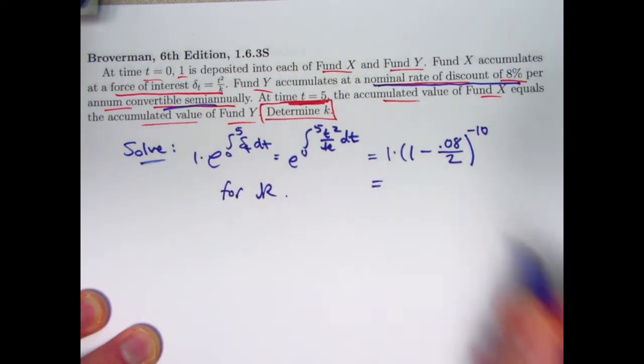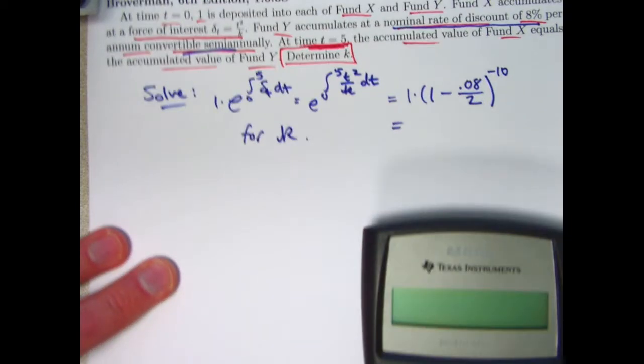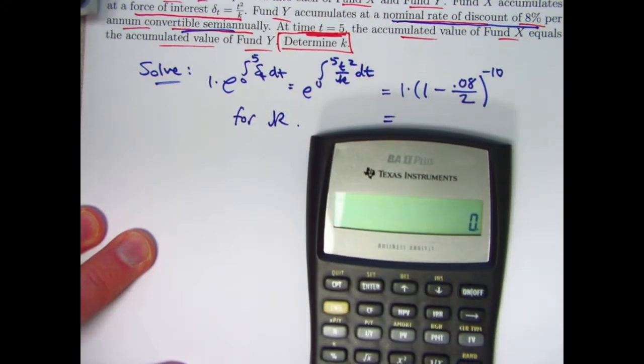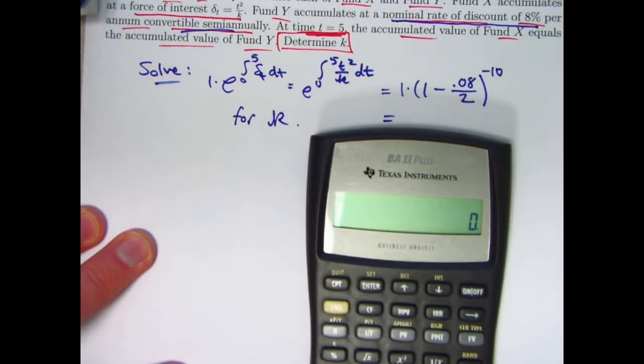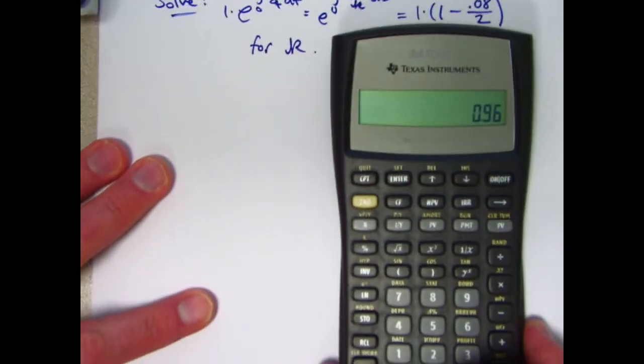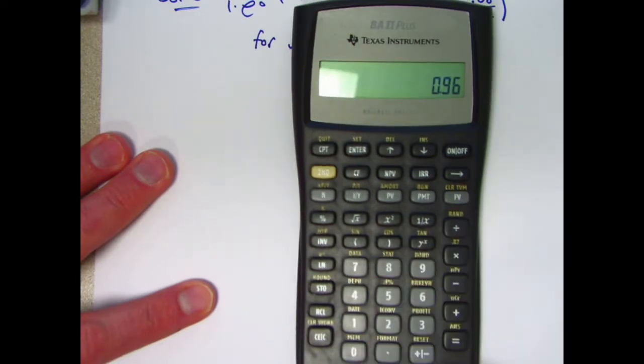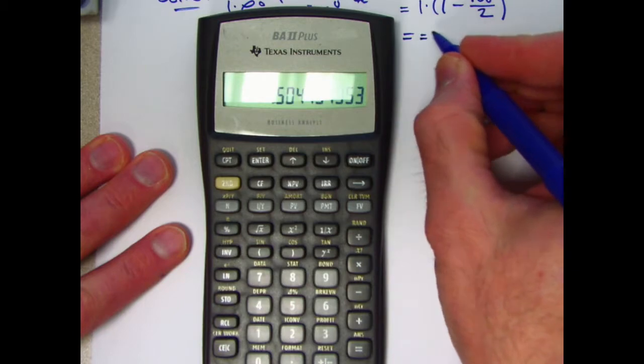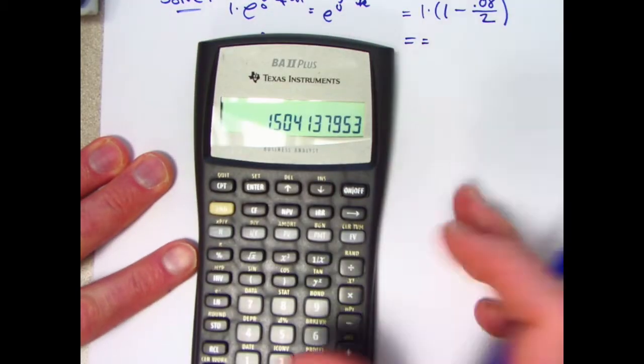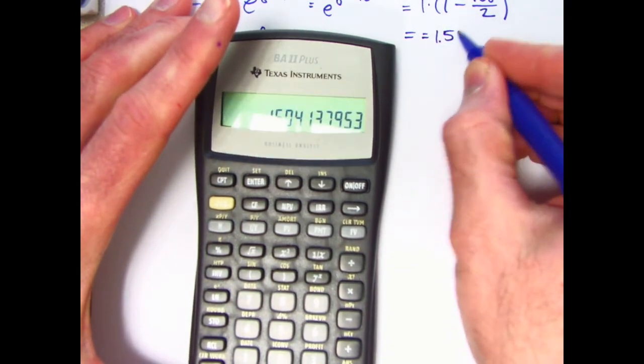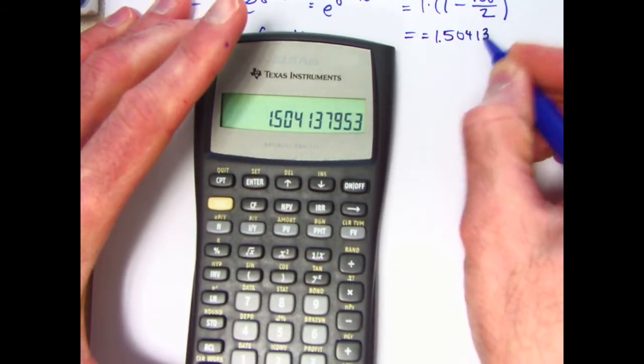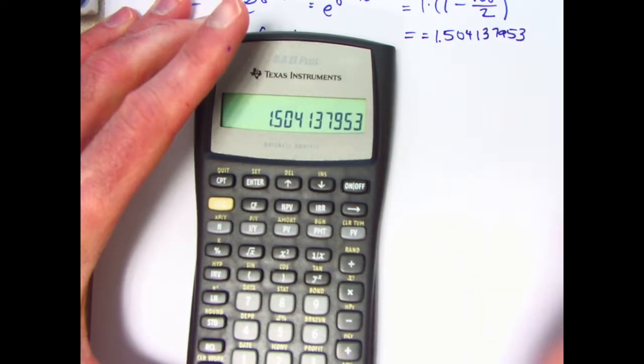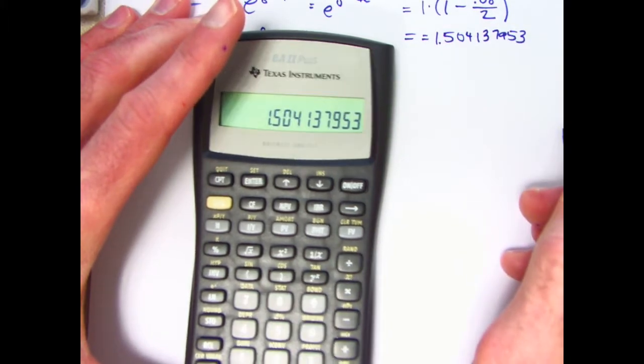All right, the right-hand side is just a number. Let's evaluate that first. 0.08 divided by 2 is 0.04. 1 minus 0.04 is 0.96. I want to raise that to the negative 10 power, so press my y to the x button, then 10, then negative. Kind of odd ordering of those operations. That quantity is, you can see it here, 1.504137953. I'll go ahead and store that value in register 0.